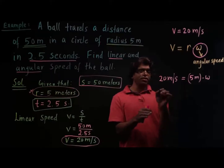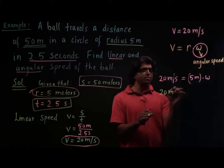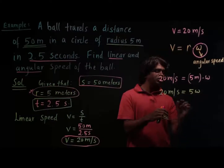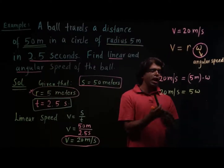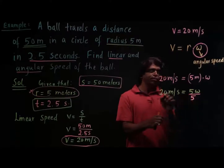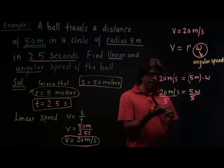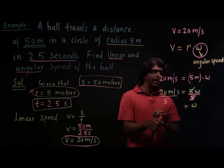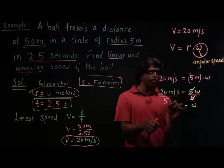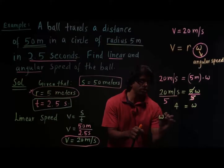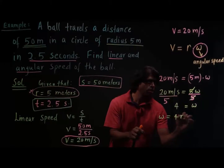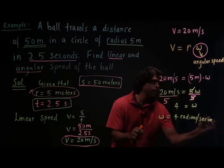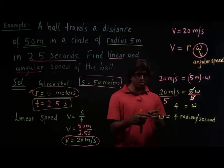Simplifying further: 20 meters per second equals 5·omega. Dividing both sides by 5, we cancel the 5 on the right side, and 20 over 5 is 4. So the angular speed omega is 4 radians per second, since the unit of angular speed is radians.